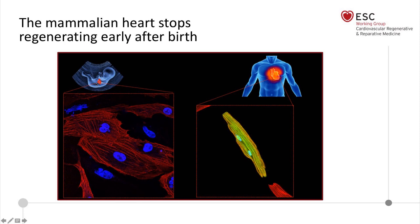During embryonic development and intrauterine life, cardiomyocytes actively proliferate and divide to build the heart mass. Then, something happens at birth which makes them quiescent — they terminally differentiate, completely change their structure, and become rod-shaped cells, often multinucleated, with a very complex sarcomeric contractile apparatus that is probably a physical constraint to cell division. We will come back to this point at the end of the presentation.